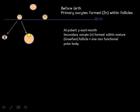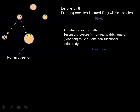Immediately after ovulation, there are two possible outcomes. One of them is that no fertilisation may occur, in which case menstruation will follow in a couple of weeks or so.